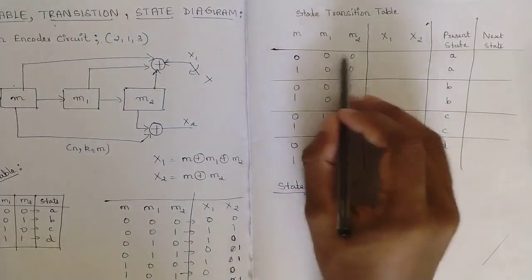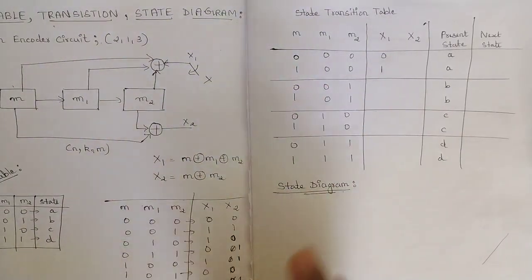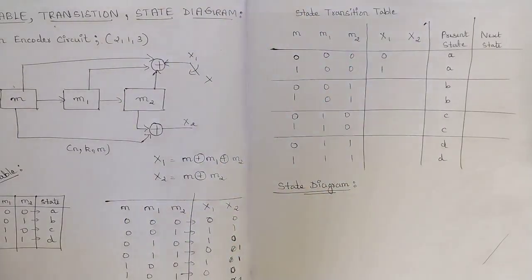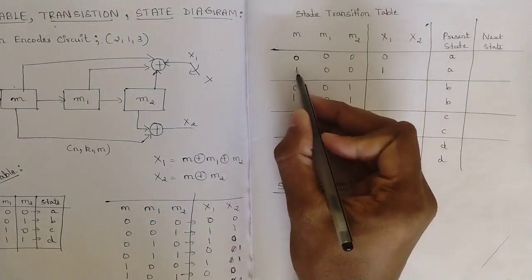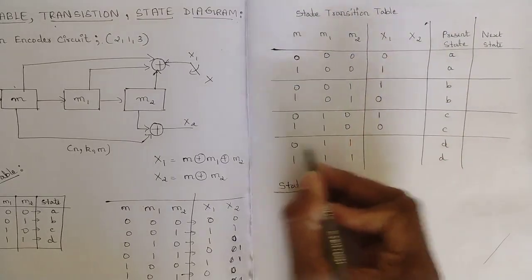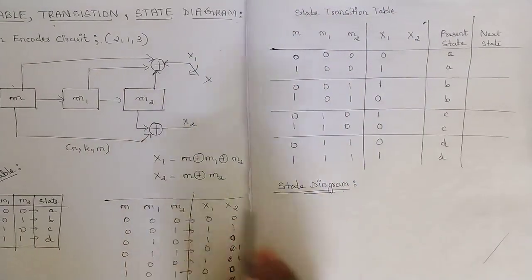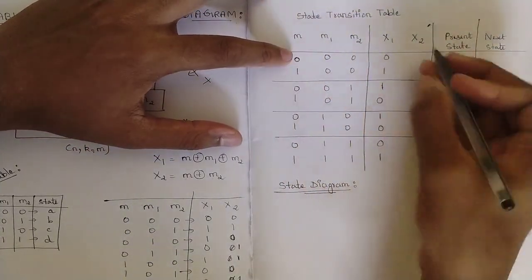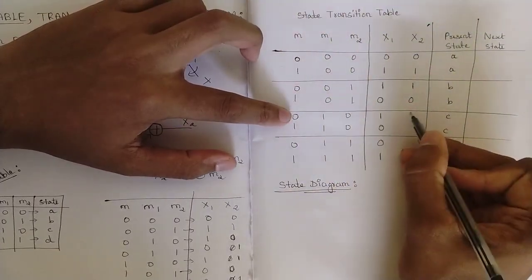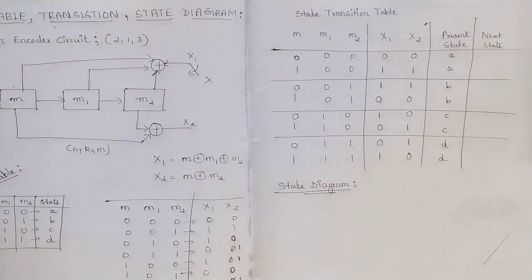For x1, sum m, m1, and m2 using modulo-2 addition. The trick: even number of ones gives 0, odd number of ones gives 1 — this saves time. Computing all rows for x1 gives: 0, 1, 1, 0, 1, 0, 0, 1. For x2, consider only m and m2 (neglect m1). Computing all rows gives: 0, 1, 1, 0, 0, 1, 1, 0. Find all x1 and x2 values this way.